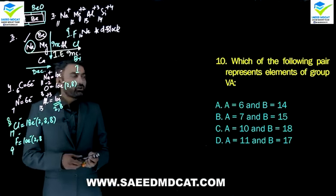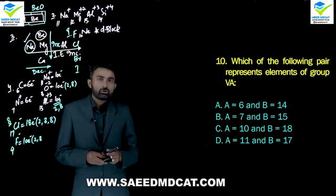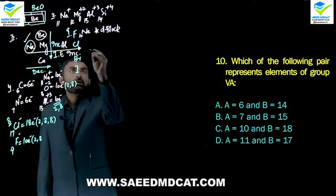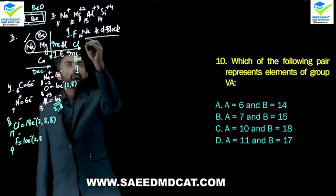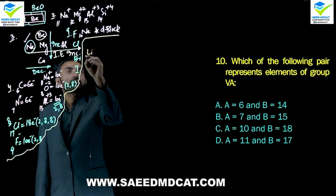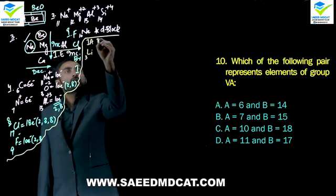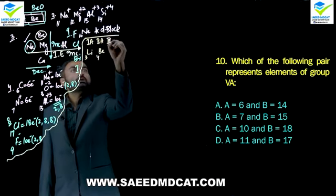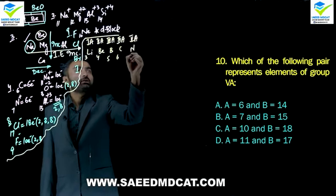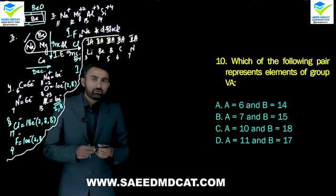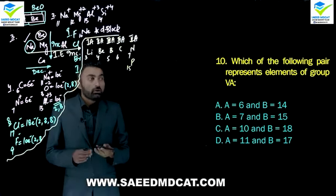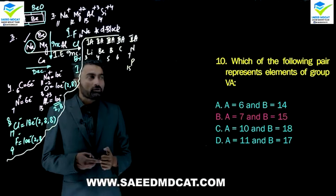Question 10: Which of the following pair represents elements of group 5A? You need to know atomic numbers. Starting from lithium (atomic number 3, group 1A), beryllium is 4 (2A), boron is 5 (3A), carbon is 6 (4A), and nitrogen is 7 (group 5A). Below nitrogen in group 5A is phosphorus (atomic number 15). So nitrogen (7) and phosphorus (15) are the group 5A members — beta option. You must know the representative elements of each group, particularly the first 20 elements.